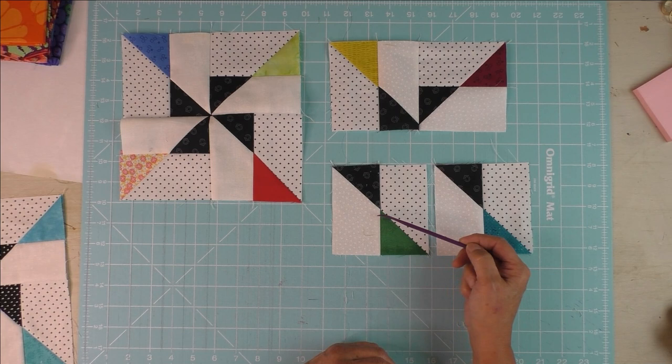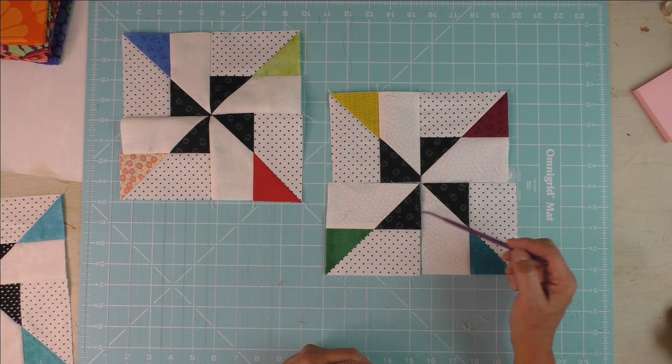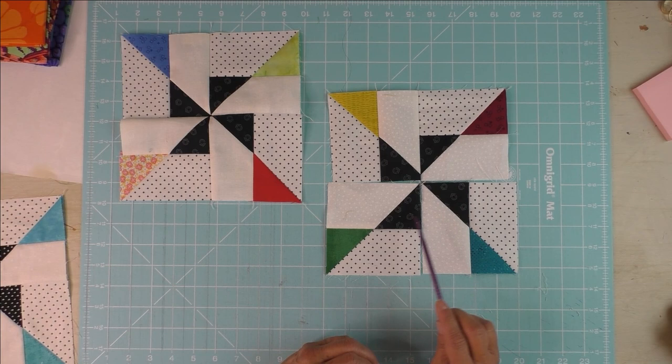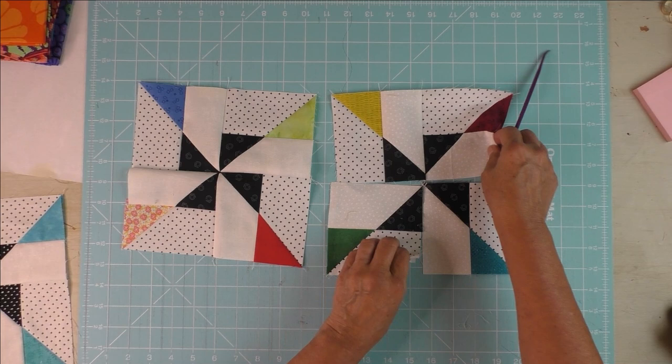Press all these in this direction. This part here shows how we've sewn the two together. You lay them out so you form a pinwheel with the dark triangles, then you sew these two together, then these two, and press to the dark triangles on both. Then your seams will interlock.